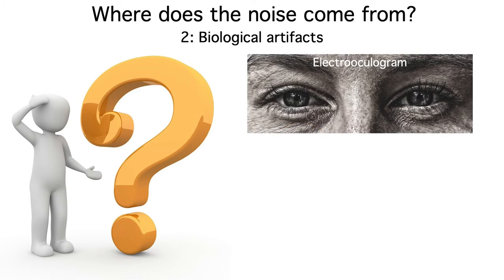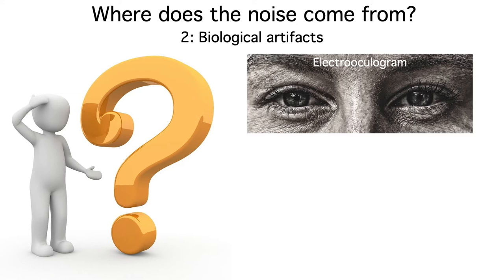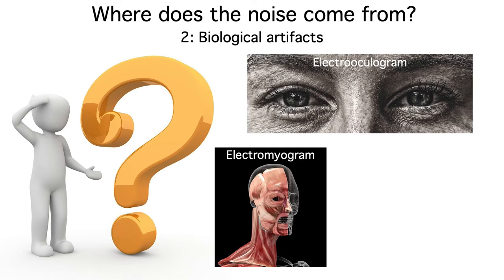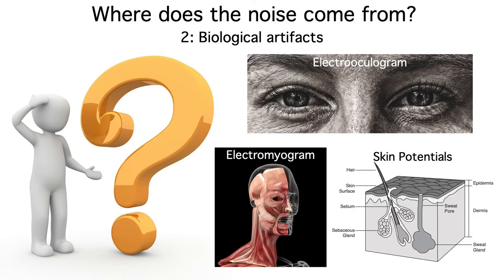Biological artifacts that are generated outside the brain are the second major source of noise in EEG recordings. For example, eye blinks and eye movements create large voltages called the electrooculogram. These voltages conduct to our scalp electrodes, often creating artifacts of over 100 microvolts. The muscles on the head and neck also create high-frequency voltages called the electromyogram that can contaminate the EEG. And the skin itself is an electric organ that produces slow voltage changes called skin potentials.